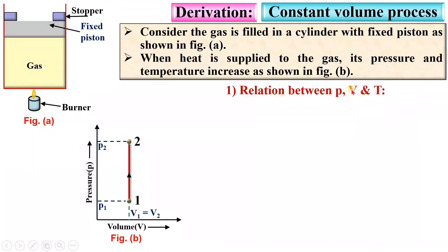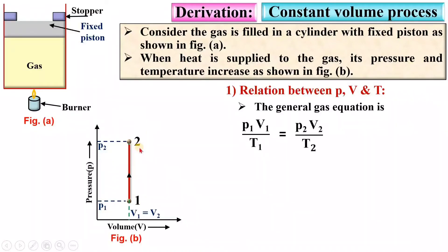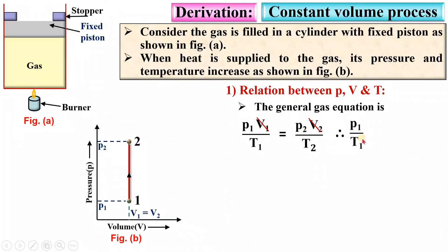Now the first relation: between pressure, volume, and temperature. The general gas equation is PV/T = constant, so P1V1/T1 = P2V2/T2. Since this is a constant volume process, V1 = V2, so the volumes cancel from both sides, and finally we get P1/T1 = P2/T2.